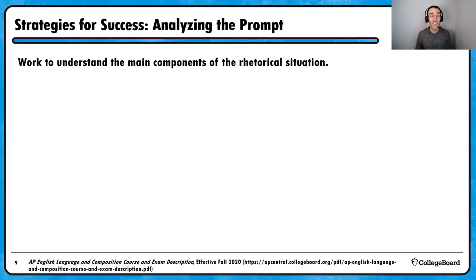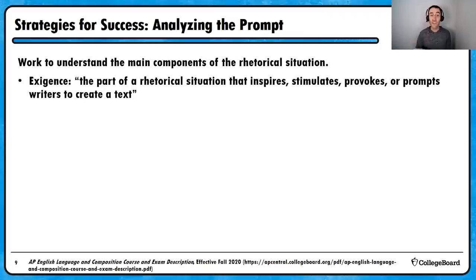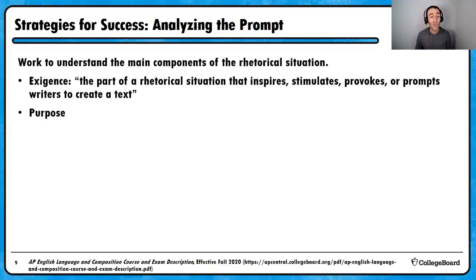The College Board, in our course and exam description, says the rhetorical situation includes six components. The first is exigence—the part of a rhetorical situation that inspires, stimulates, provokes, or prompts writers to create a text. I like to encourage students to think of this as the spark that began the essay: what moved this writer or speaker into action? What was the situation or event that demanded this piece come into existence? Related to that, we think about the purpose: what does the author want to accomplish, and how does the author want the audience to respond? A third component is the audience: to whom is the speech or piece of writing intended or delivered?